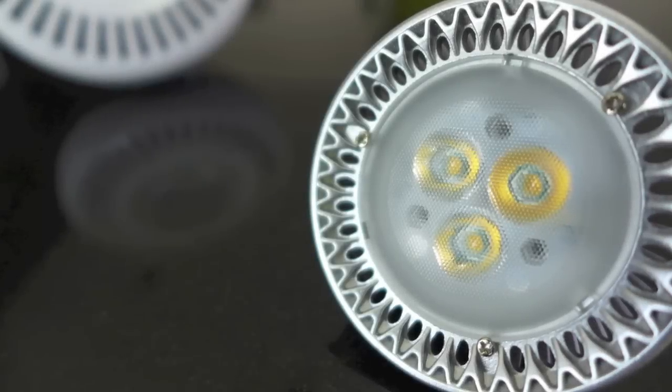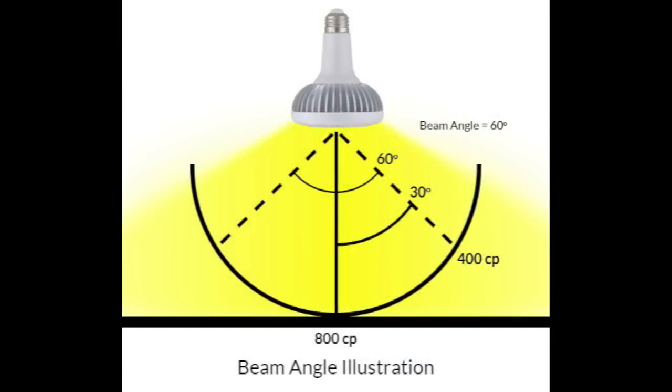For those who actually want to know how the beam angle is calculated, they measure the intensity of the light in the center, which is always the strongest, and they move out to each side. At the point the intensity is 50%, an angle is made—that is the beam angle.